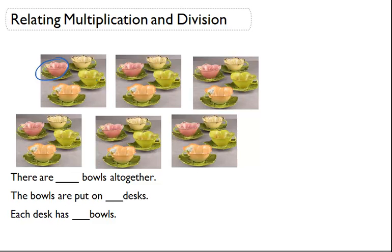So we could count them. So there's 1, 2, 3, 4, 5, 6, 7, 8, 9, 10, 11, 12, 13, 14, 15, 16, 17, 18, 19, 20, 21, 22, 23, 24. So there are 24 bowls all together.